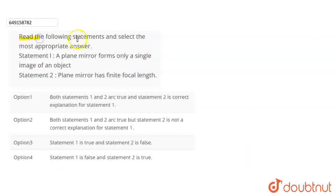In this question, we have given: read the following statements and select the most appropriate answer. Statement 1 says, a plane mirror forms only a single image of an object. Statement 2 says, plane mirror has finite focal length.